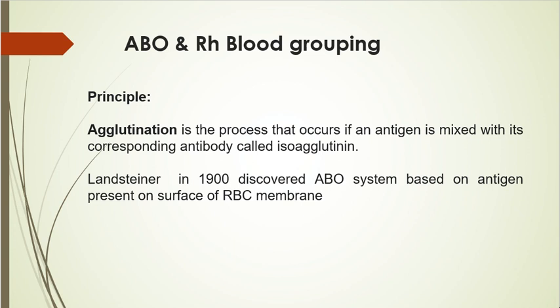We'll be talking about the classical ABO system and RH blood grouping system. The principle of this practical is based on agglutination, which is the process when antigen is mixed with antibody causing clumping of the RBCs. Landsteiner in 1900 discovered the ABO system, and later in 1940 also discovered the RH system.